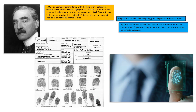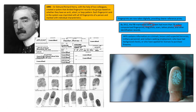By 2012, the FBI maintained the AFIS system — that's I-A-F-I-S, pronounced AFIS — which had more than 76 million computerized fingerprints, mug shots, scars, tattoo photos, and other identification records. This is the database that the FBI and local and state law enforcement use to access criminal information files, which helps solve crimes nationwide. AFIS contains information on criminals, known and suspected terrorists, military personnel, and civilians seeking employment, including teachers.